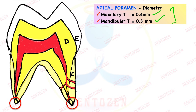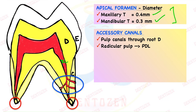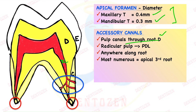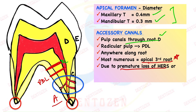An important term here: accessory canals. These are additional canals extending laterally from the root canals towards the periodontal ligament — canals passing through root dentin. They can be seen anywhere along the root but are most numerous in the apical third. How are they formed? Root is formed with the help of HERS, but if there is premature loss of HERS, dentin will not form there and a connection will be left between the pulp and the PDL. Alternatively, if a blood vessel is present during dentin formation, a connection will also be left.